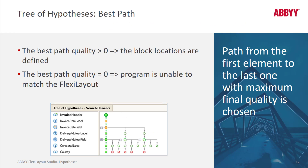We can talk about the best path. The hypotheses in the best path are joined by green lines, and other hypotheses are joined by gray lines. The best path is on the left. Note that we can find three delivery address labels — here's one, here's another, here's another — and you can call that branching.